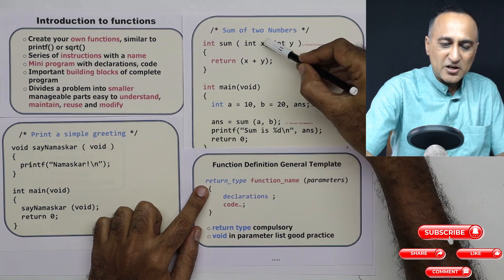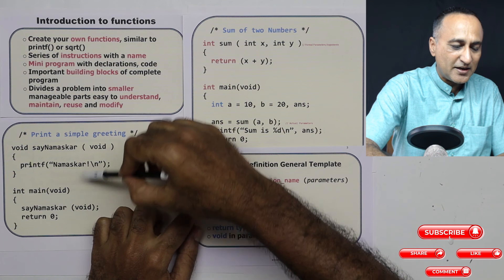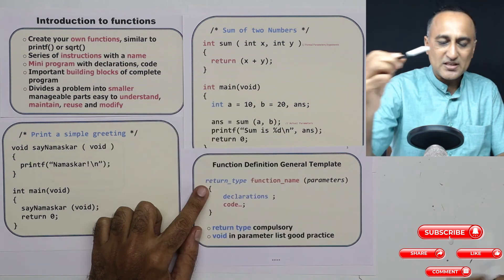In this case, a b is communicating with x y. In this case, there is no data transfer between main to sayNamaskar.